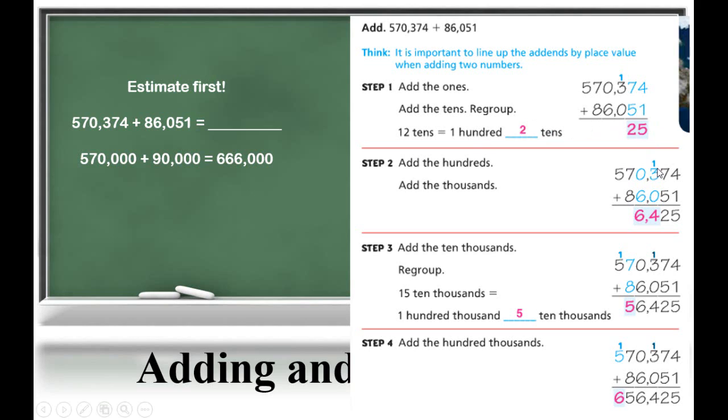So I'm going to regroup that 100 into the hundreds column and I'm going to record my 2 in the tens column. Now, I'm going to add 100 plus 300 plus 0 hundreds and that equals 400. I'm going to do the same process in the thousands, the tens thousands, and the hundreds thousands column. Now, my final sum is 656,425. Let's check that against our estimate. Our estimate was 666,000. So we know that we're in the correct ballpark.